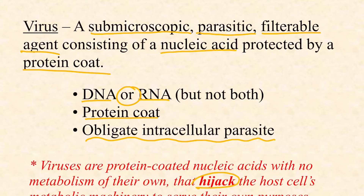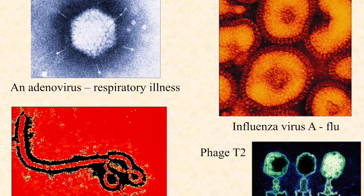Here are some images of viruses to give you a visual sense of what they're about. In the upper left we've got an adenovirus — one of many classes of viruses that can cause mild upper respiratory illness, what we think of as the common cold. You can see they're very symmetrical and geometric in shape, and that becomes important. Upper right, you've got an influenza virus — they look a little less geometric, kind of squishy, because they have a membrane wrapped around them. That's an optional component we don't see in all viruses.